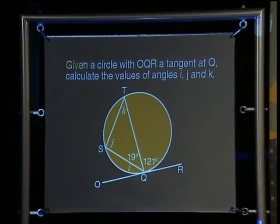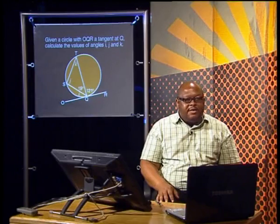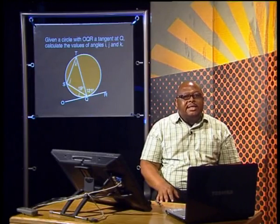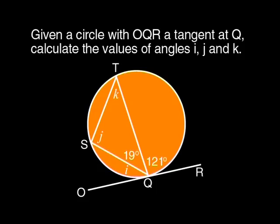Given the circle with tangent OQR at Q, calculate the values of angles i, j, and k. You could start with any of these angles, but usually they are listed in the order that is easiest to find. So it is likely that if we find the value of angle i, this will help us to find j and then k. So let's start with angle i.